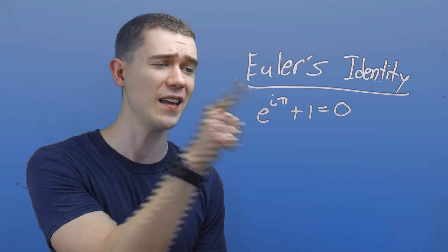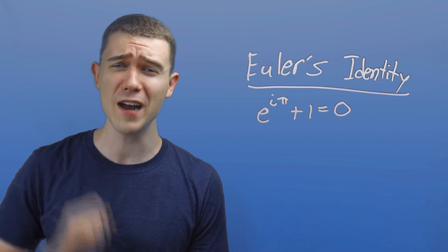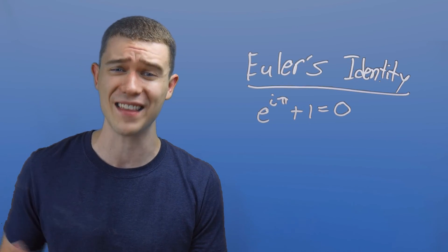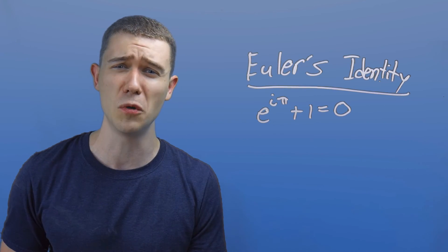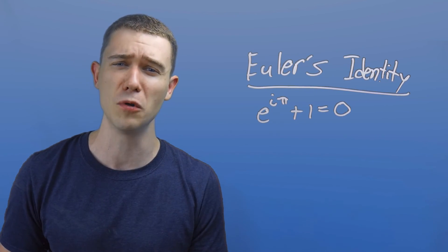What more do you want from an equation? It has e, it has i, it has pi, it has one, it has zero, the five most important constants in math. And I know that I'm using a circular argument since I'm trying to say pi is important and then I'm assuming pi is important. But I mean,